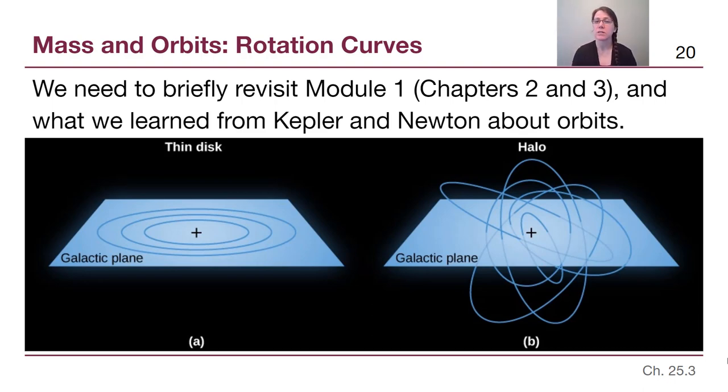When we look at the stars in the galaxy, all of the stars in the disk of the galaxy, they all rotate in the same flat plane. And they do so in a way that is very similar to the planets in our solar system.